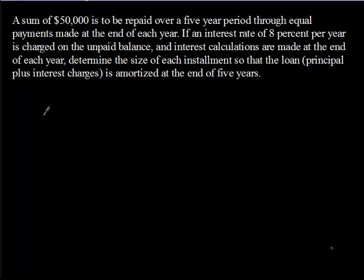The first thing we're doing in this problem is figuring out what it means to amortize something. Usually if you're amortizing something, you're paying it off in monthly or yearly installments. You're mainly making a bunch of payments to get rid of a debt that you might have — a car loan, a mortgage, a homeowner's loan — as long as you're making payments of the same size over and over to get rid of it, it's going to be amortized.